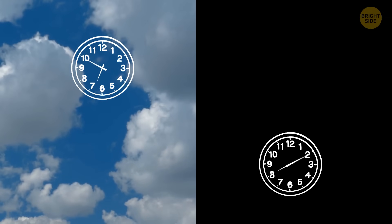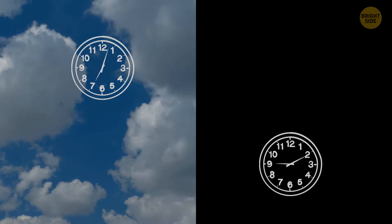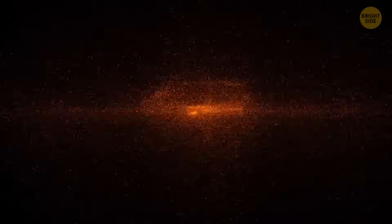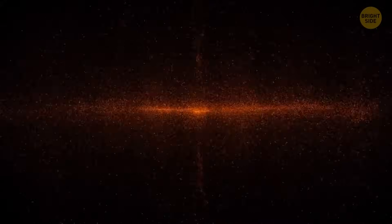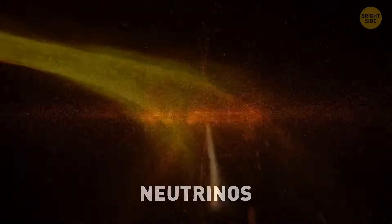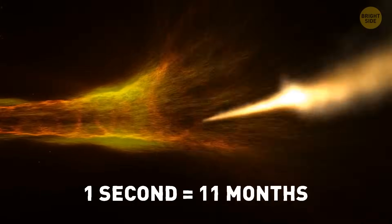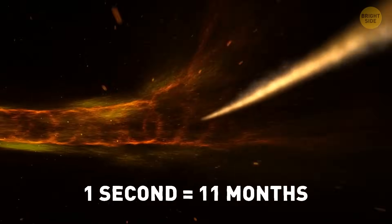The faster an object is moving, the more time will slow down for it. Currently, the fastest speeds achieved by human technology are seen in a special type of particles called neutrinos. Some of these can move at almost the speed of light. At these speeds, one second for the protons is equal to 11 months for us.